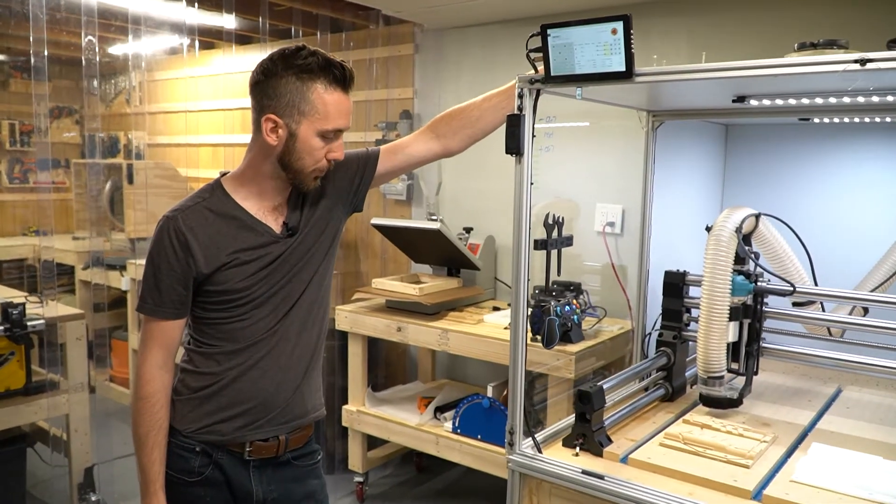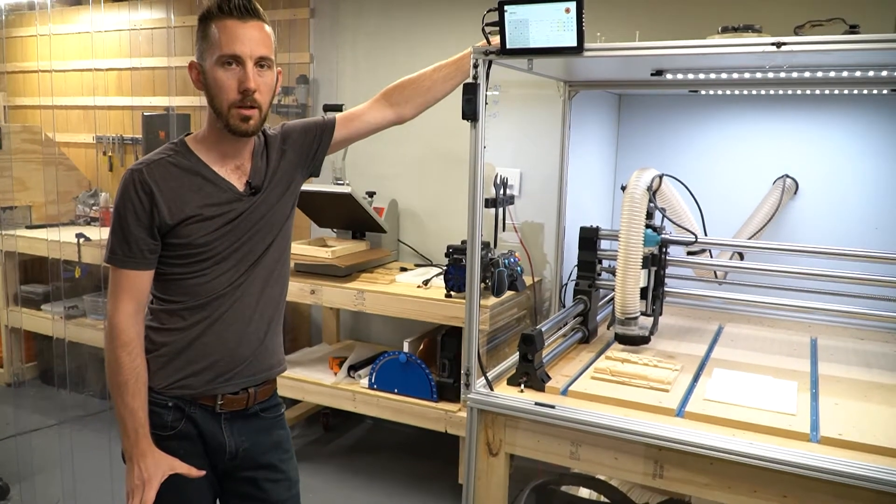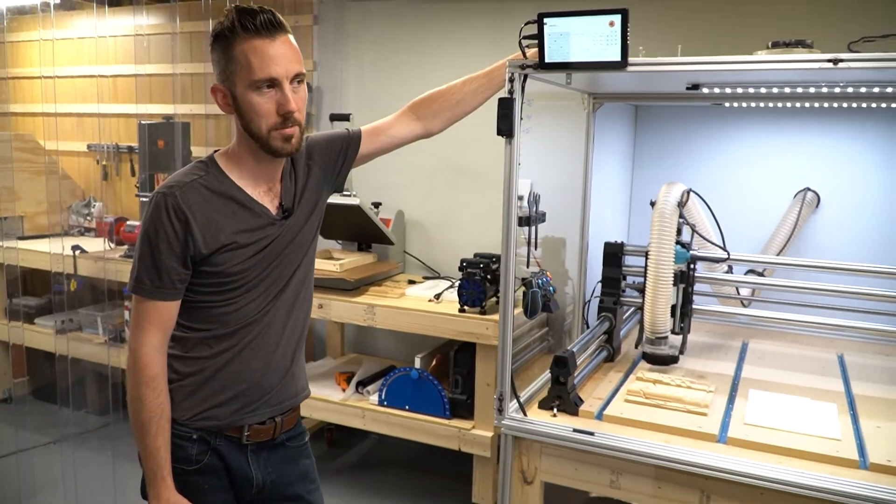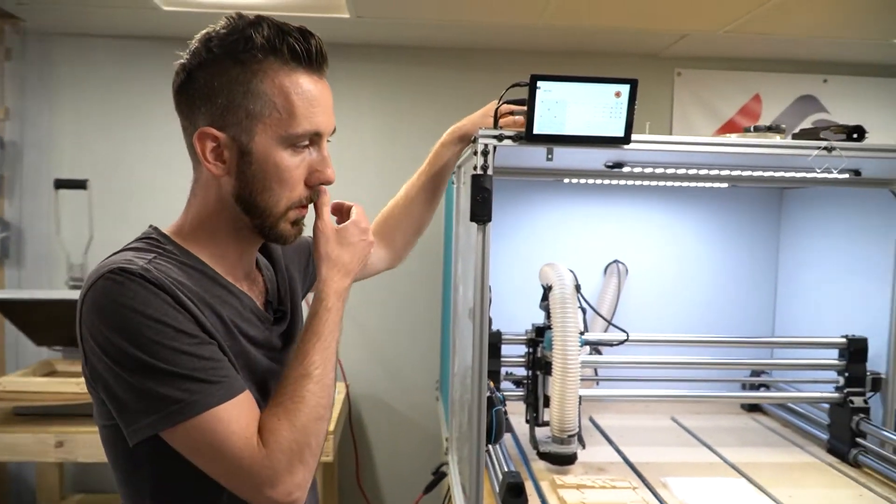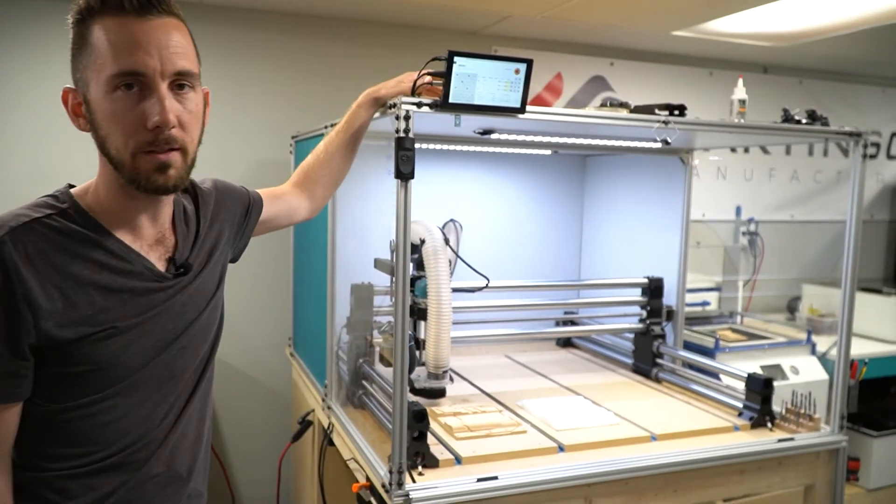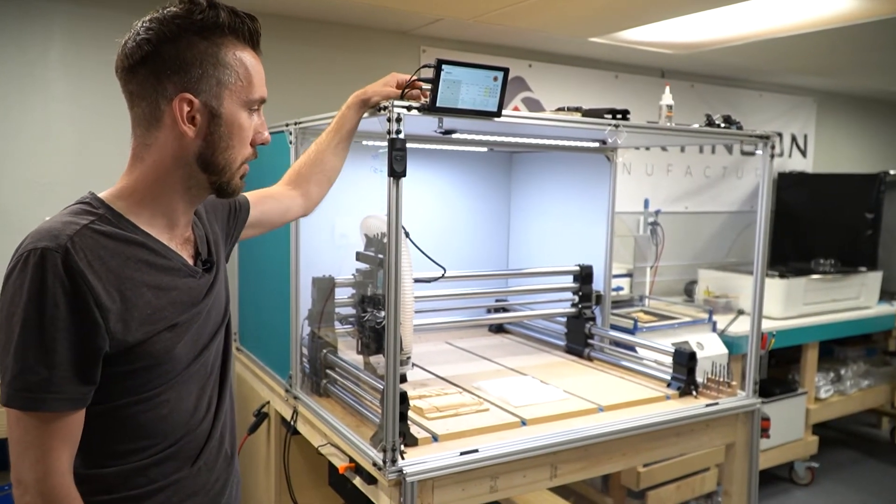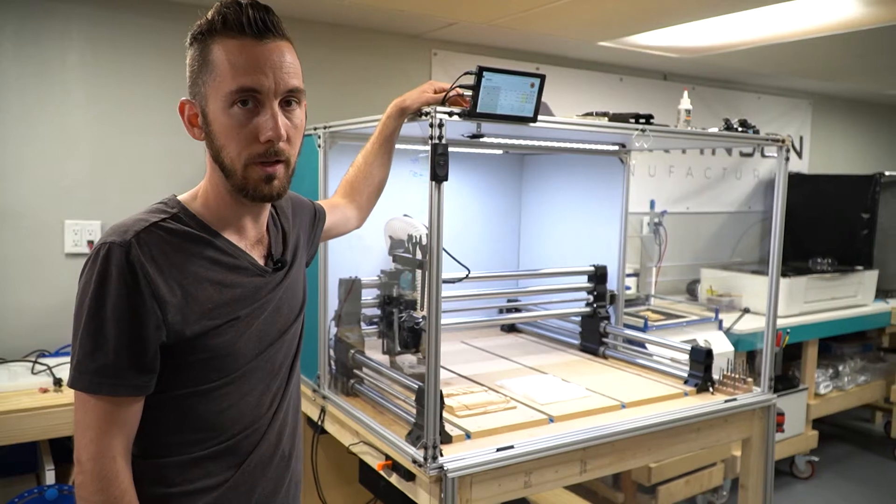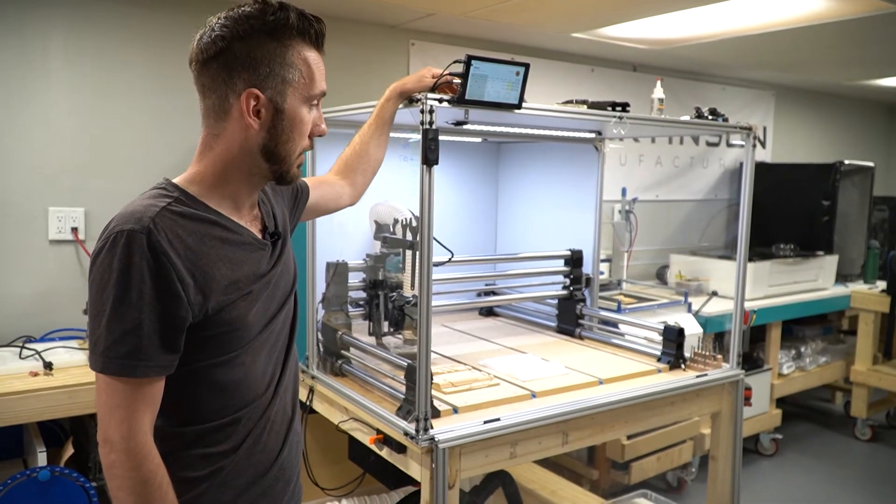I think I pretty much covered everything. Again, nothing crazy or insanely innovative. A lot of people have very similar enclosures, but just thought I'd kind of add to the body of knowledge that already exists out there. Hopefully it's an inspiration to someone out there. If you have any other ideas of how I could improve mine, I'd love to hear it. I always love improving things I got.